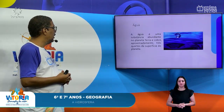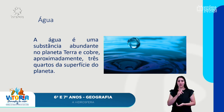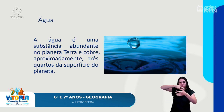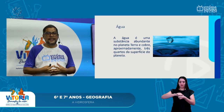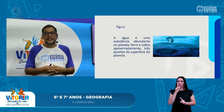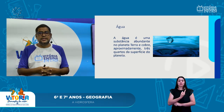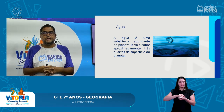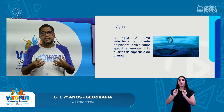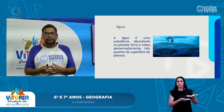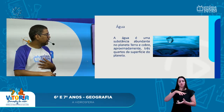A água é uma substância abundante no planeta Terra e cobre aproximadamente 3 quartos da superfície do planeta. Nós moramos no planeta Terra, mas a superfície da água é azul — o planeta é azul — e essa água é muito importante para a manutenção da vida no nosso planeta. Vamos agora observar alguns lugares onde encontramos água e algumas questões relacionadas à água no nosso planeta.